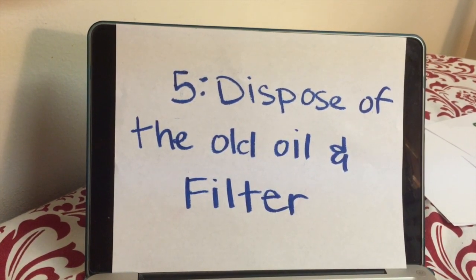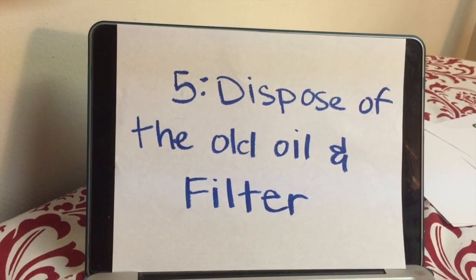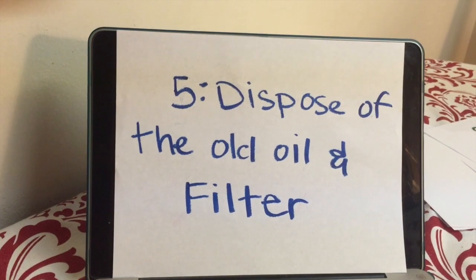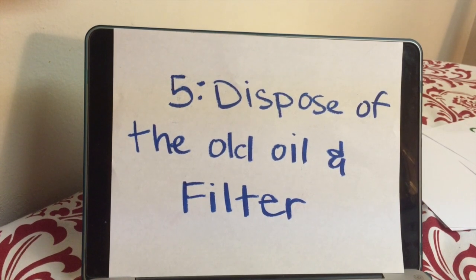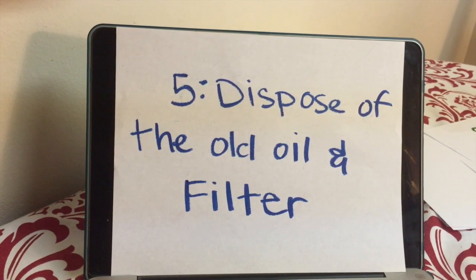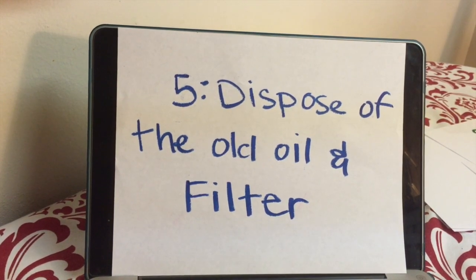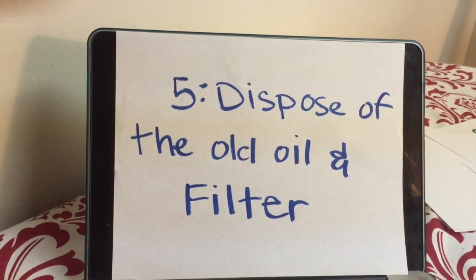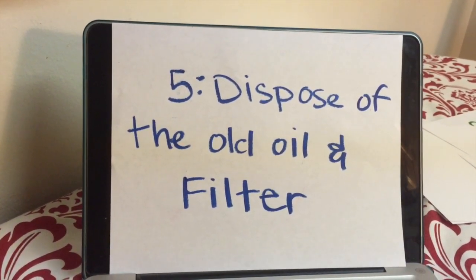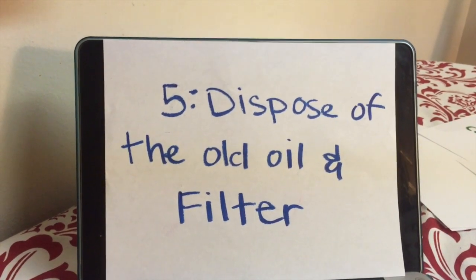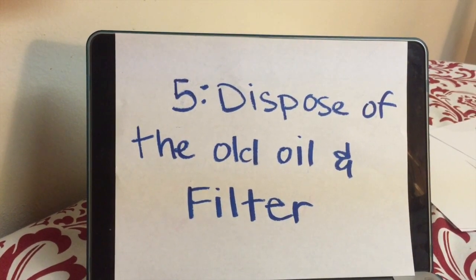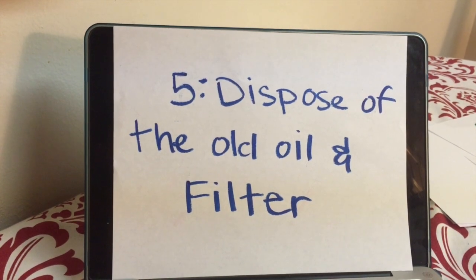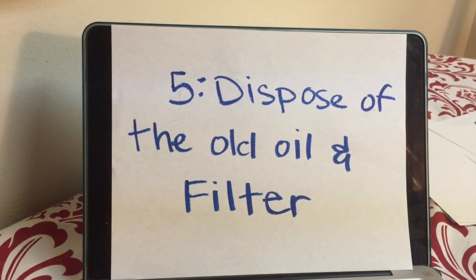The same goes for the filter — keep the box the new filter came in and put the old oily filter in there. Once you're done, you'll have about three to four quarts of used oil and a dirty filter. You can throw the filter away in any dumpster, but the oil must be properly disposed of — you can't just throw it away unless your city's trash service specifically picks it up. The more economical and green option is to take the oil to any auto parts store and they'll recycle it so it can be used again.